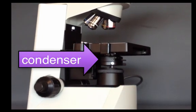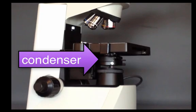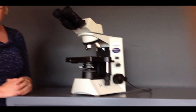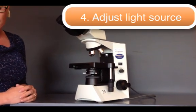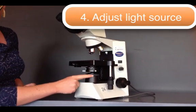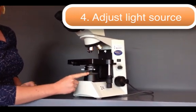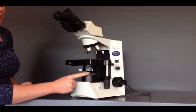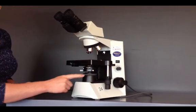The condenser controls your focus for your depth perception. Next, you need to make sure that the light source is turned all the way open. You see this wheel down here. You want it to be all the way open, which is clockwise. That's going to allow the maximum amount of light in.